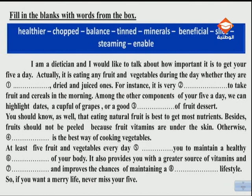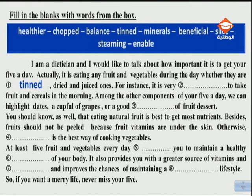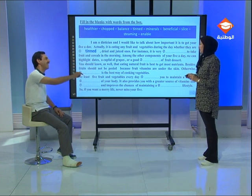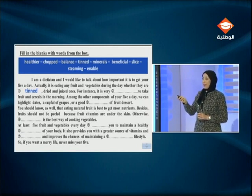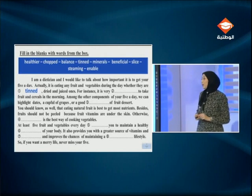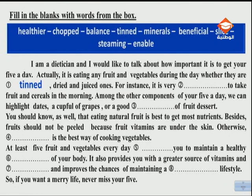I am a dietitian and I would like to talk about how important it is to get your five a day. It is eating any fruit and vegetables during the day, whether they are tinned, dried, or juiced ones. A tinned fruit is one preserved in an airtight tin or can. For instance — meaning for example — it is very beneficial to take fruit and cereals in the morning.